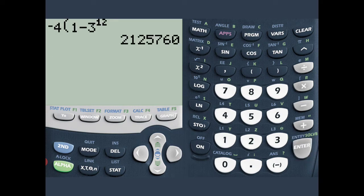21, well, that's a large number, so 2, 1, 2, 5, 7, 6, 0.